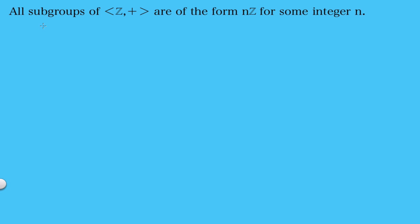In this video I'm going to prove that all the subgroups of the group of integers with addition have this form, where this is the set of integer multiples of n for some integer n. This subset is represented as n times x for all x in the set of integers, so we call this all integer multiples of n. We're going to show that the only subgroups of the group of integers have to look like this. So let's go ahead and start this proof.